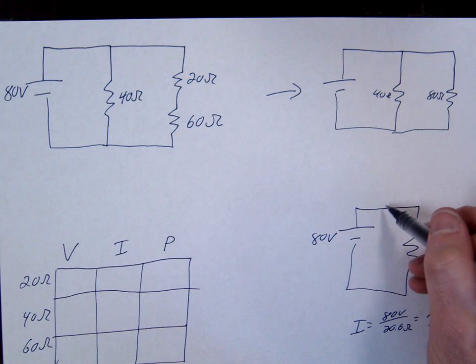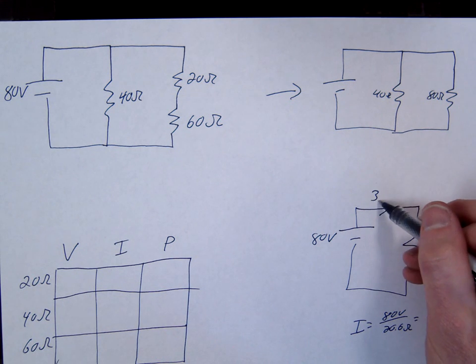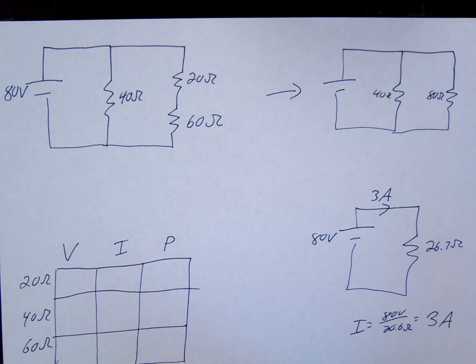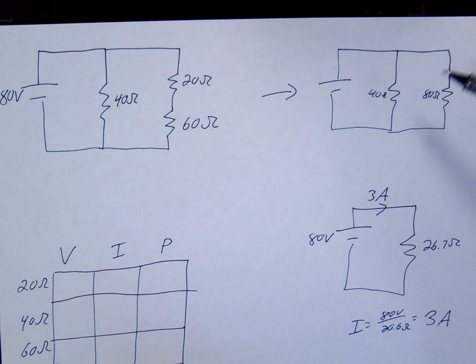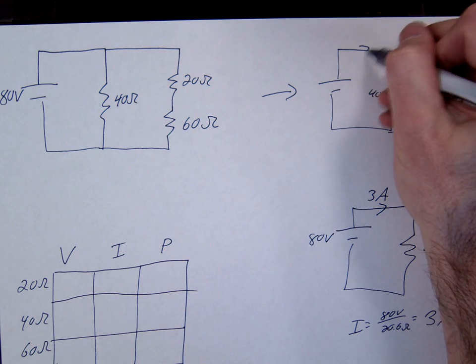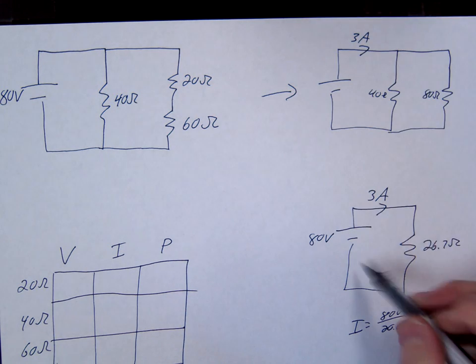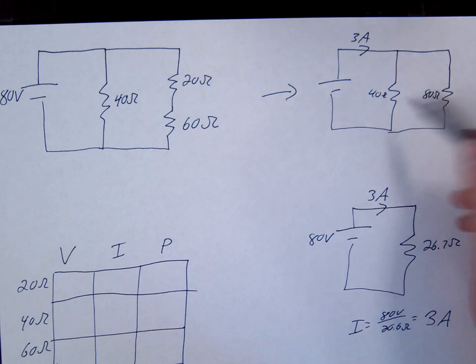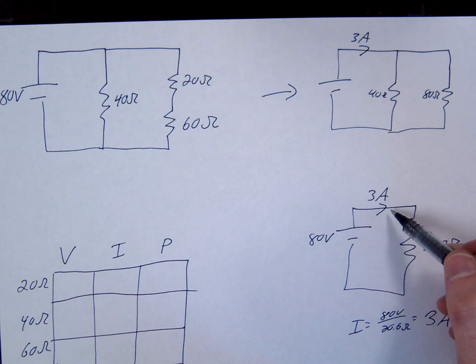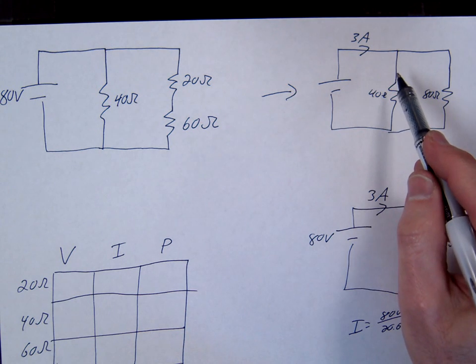And if you don't round, you should get exactly 3 amps. So that's our current here. Now we're going to start placing that onto our slightly more challenging circuit. So 3 amps goes right here. Remember this is coming into here and then it splits, but we have 3 amps initially coming through here.